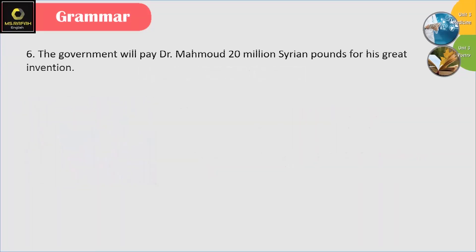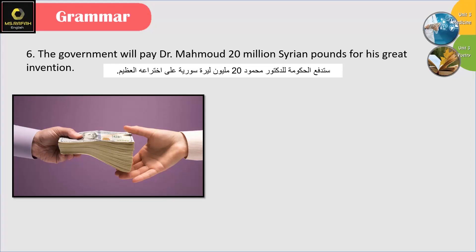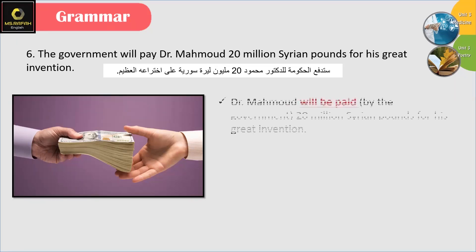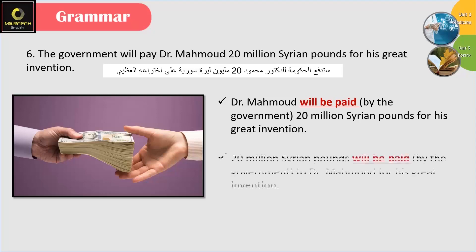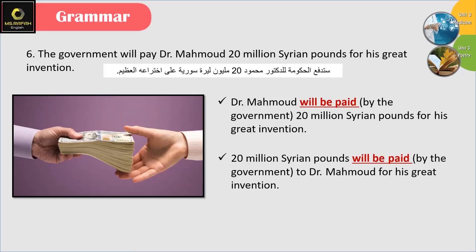Number 6: 'The government will pay Dr. Mahmoud 20 million Syrian pounds for his great invention.' We can say: 'Dr. Mahmoud will be paid by the government 20 million Syrian pounds for his great invention.' Or we can say: '20 million Syrian pounds will be paid by the government to Dr. Mahmoud for his great invention.'